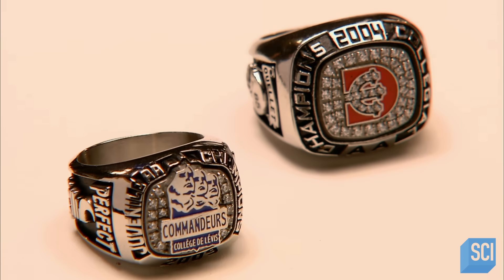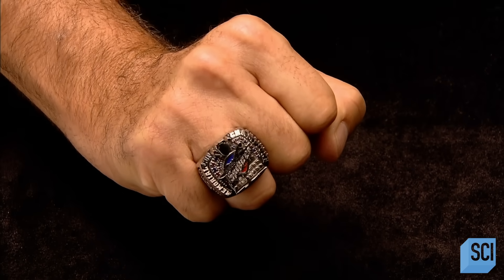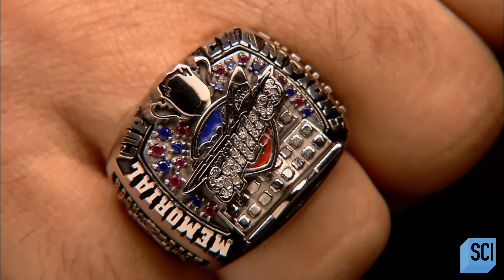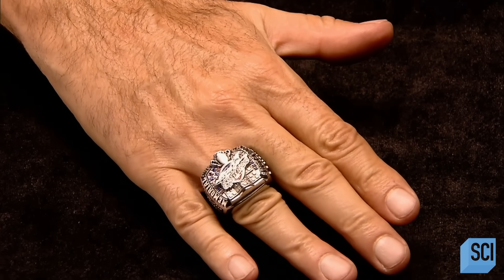Championship rings are entirely custom-made. They typically feature the team name and logo, along with the year of the big win. They can also have personalized touches such as the player's name or jersey number.